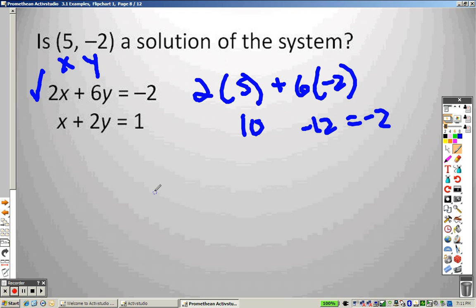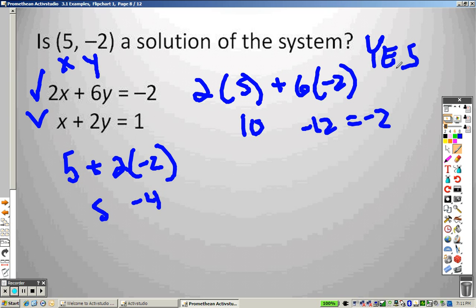For this one, but it has to work for both. If it doesn't work for both, it's not the right answer. So I plug it in here. 5. Negative 2. That's 5 and a negative 4, which is a 1. Since it works for both, is it a solution? Yes, it is a solution. Yes, it is a solution.